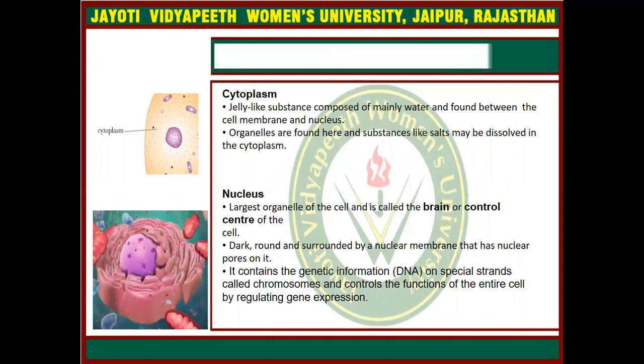The next organelle is cytoplasm. Cytoplasm is the jelly-like substance between the cell membrane and the nucleus. The nucleus is present in the cytoplasm. All the organelles are present in the cytoplasm, such as mitochondria, ribosomes, RNA, endoplasmic reticulum, and Golgi complex.